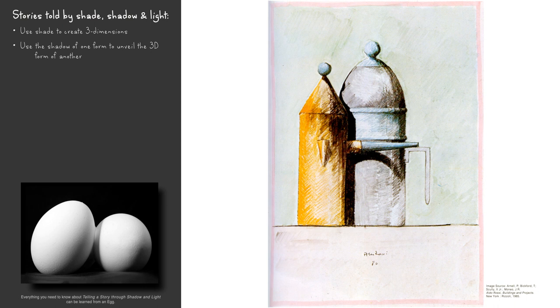At the same time, notice how Rossi is using the one-third rule. He is also guiding our eye from warm color to cool color. The shading is never black — instead, the shade and shadow are darker versions of the object upon which they fall.